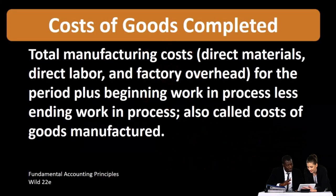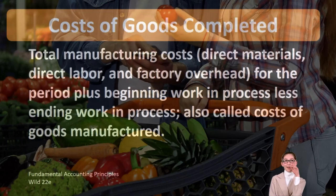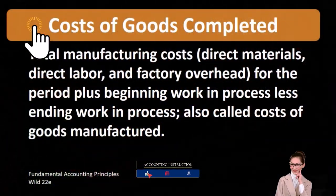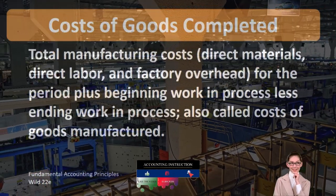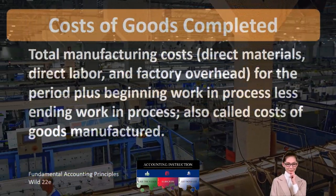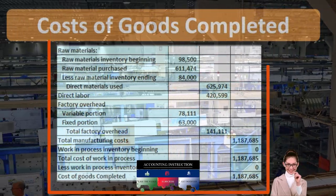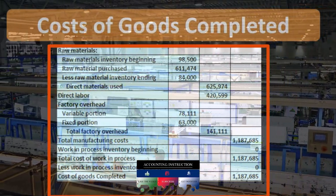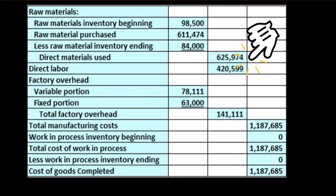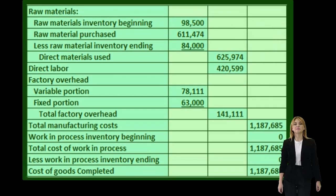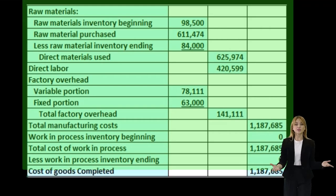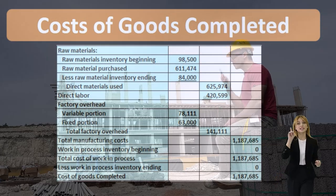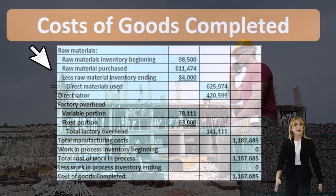When considering the cost of goods completed, we are considering a manufacturing company — generally a company that manufactures inventory rather than purchasing and selling it. We are making the inventory, and therefore within our cost of goods sold calculation we will need to replace purchases with the cost of goods completed: the raw materials, direct labor, and factory overhead involved in the production process.